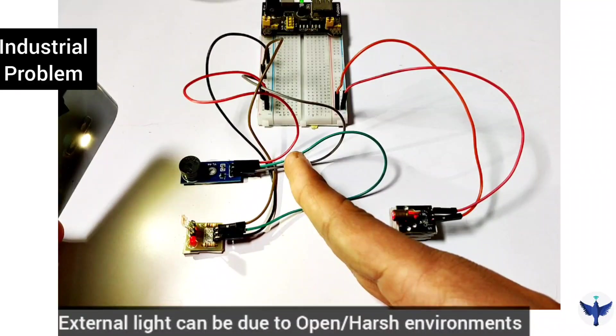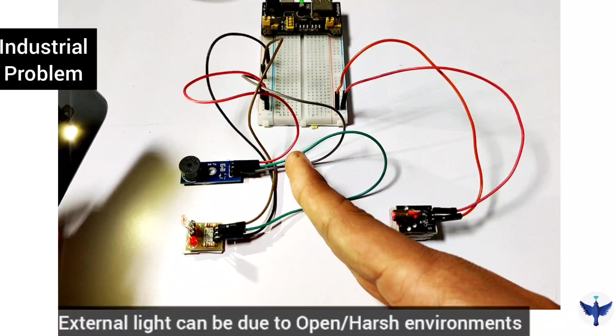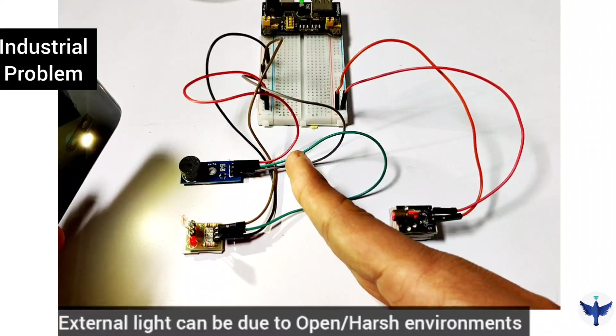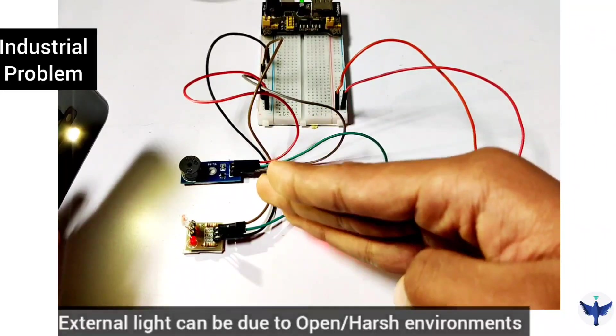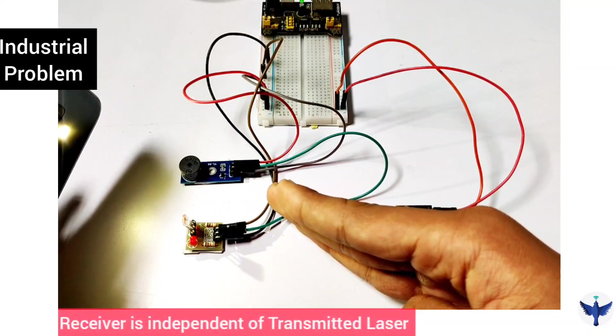We can see that the receiver of the sensor is already sensing the external light source. It is independent of the target that is moving in front of this and it is sensing the external light source.